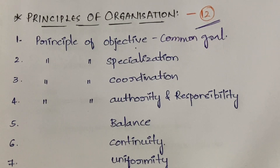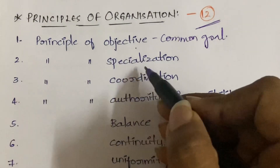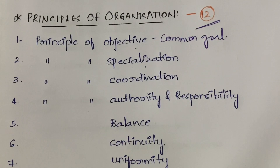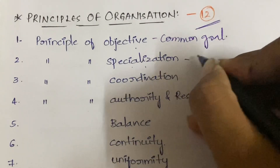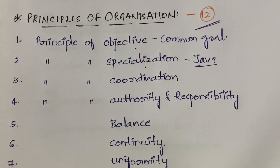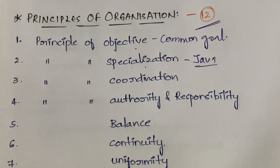The second is the principle of specialization. Every person in the organization should be allocated work based on their skill set and specialization. For example, if a person is good at Java, they should be given a job related to Java, not something else. Work should be assigned according to the skill in which the person is specialized.